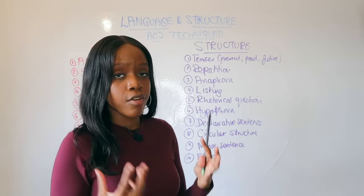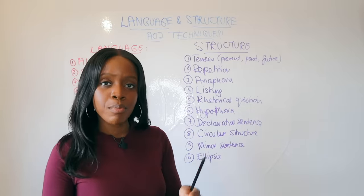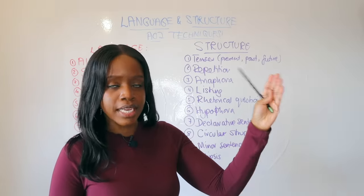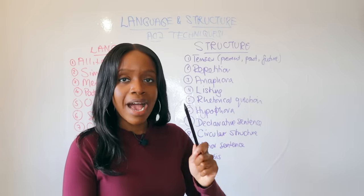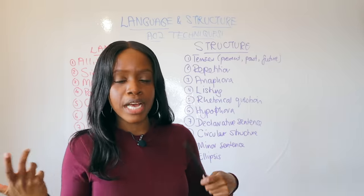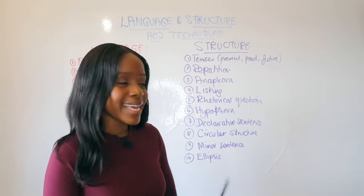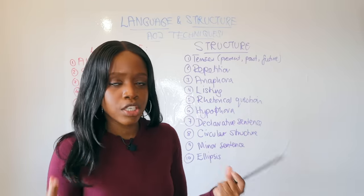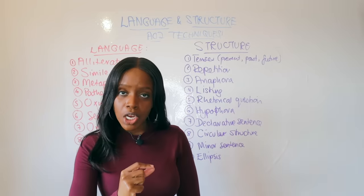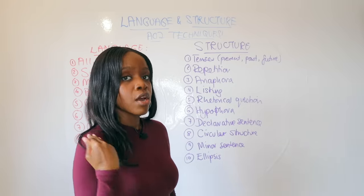Anaphora is a grade nine technique. The fourth technique is listing — and you can be more precise by distinguishing asyndetic listing, which is listing without any 'and', 'but', or 'because', just commas — versus syndetic listing, where lots of 'ands' and 'buts' are used, such as 'I bought apples and pears and bananas.' The fifth structural technique is rhetorical question — a very popular question not meant to be answered. The sixth, closely related, is hyperphora — when a writer poses a rhetorical question and immediately answers it.